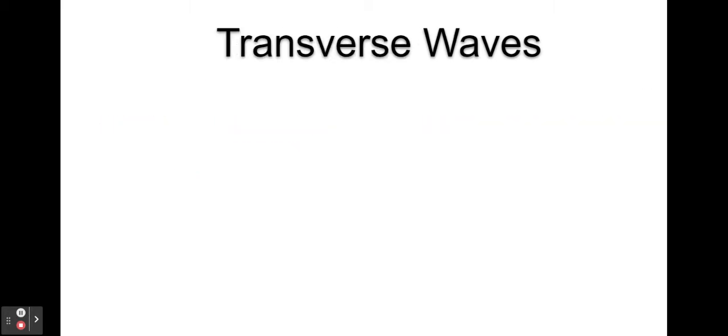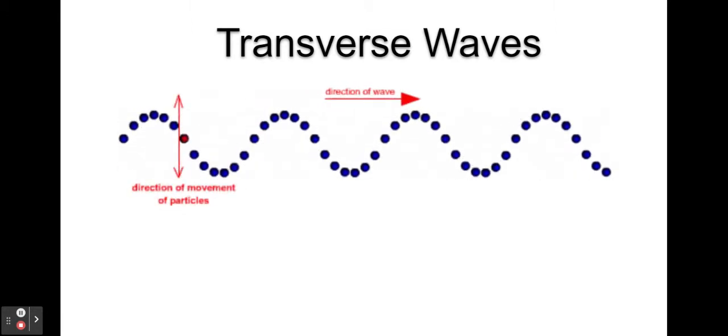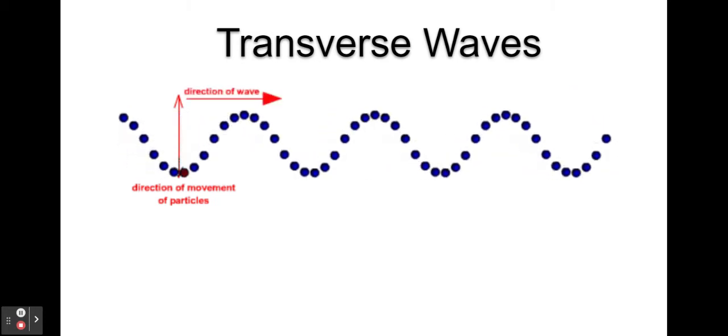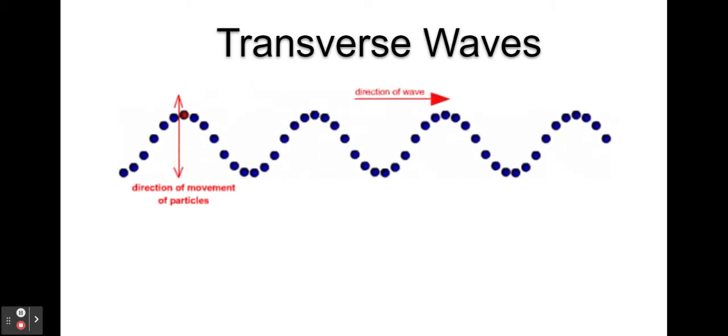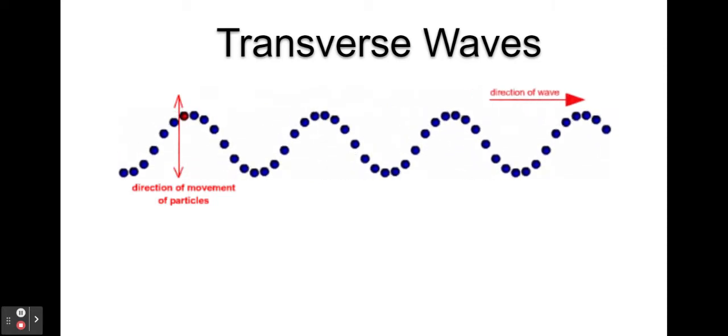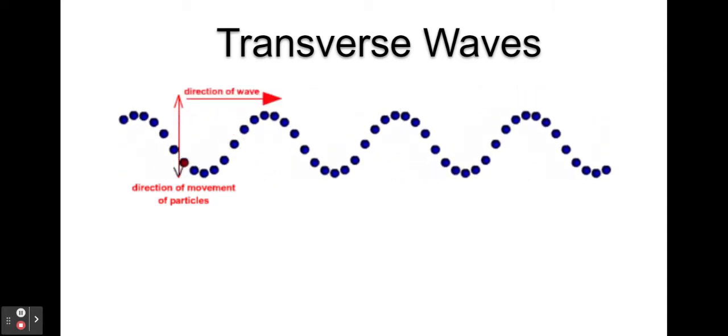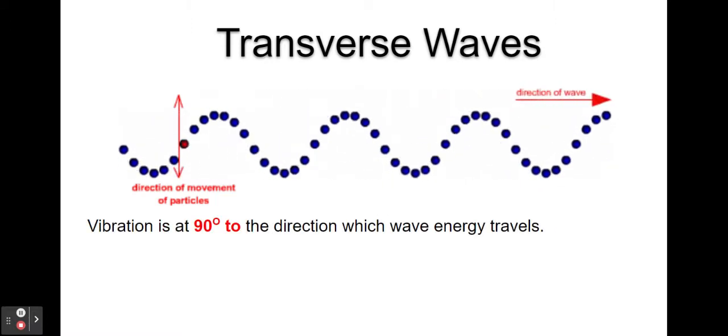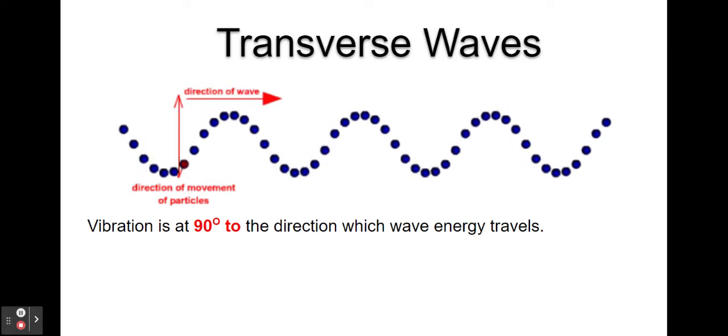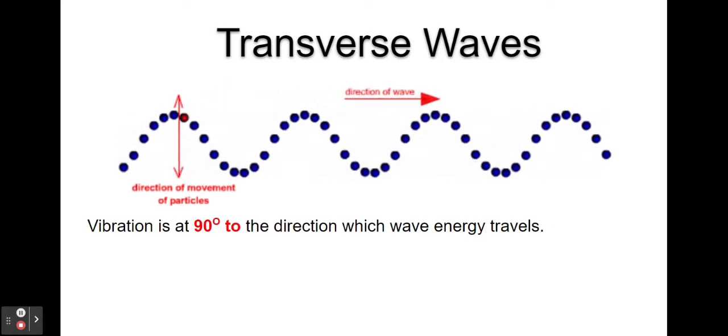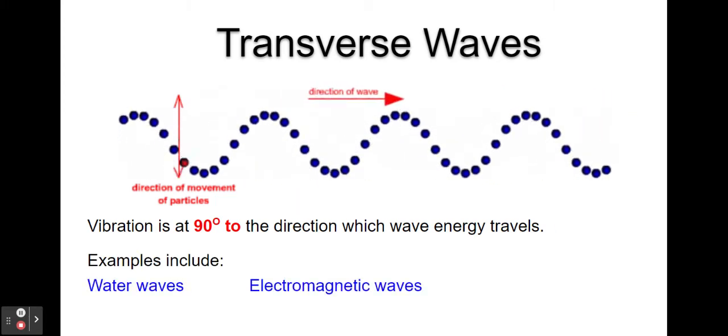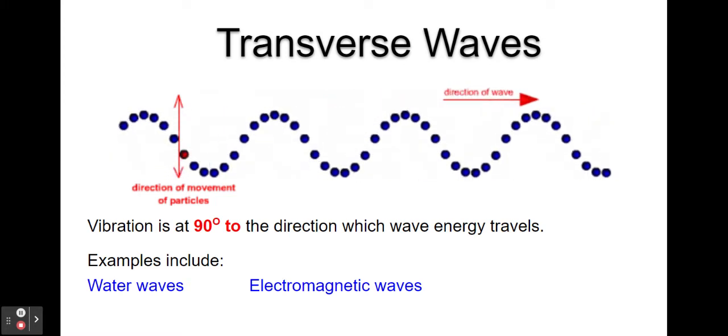Transverse waves are the opposite of this. Here we can see a transverse wave. The direction of the wave energy is left to right across the screen, but the particles that make up the wave are now oscillating vertically, up and down the screen. To define a transverse wave, the vibration is at 90 degrees to the direction which the wave energy travels. Some examples of transverse waves are water waves and electromagnetic waves.